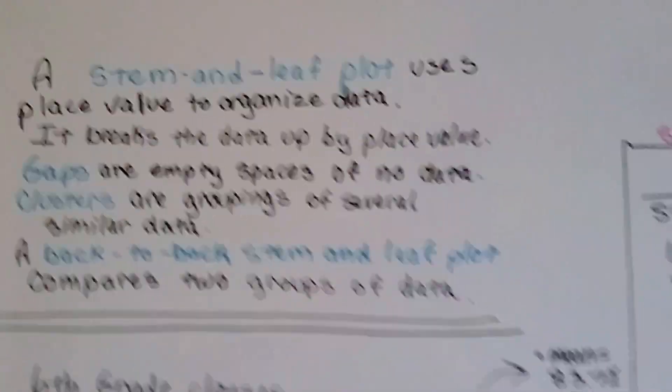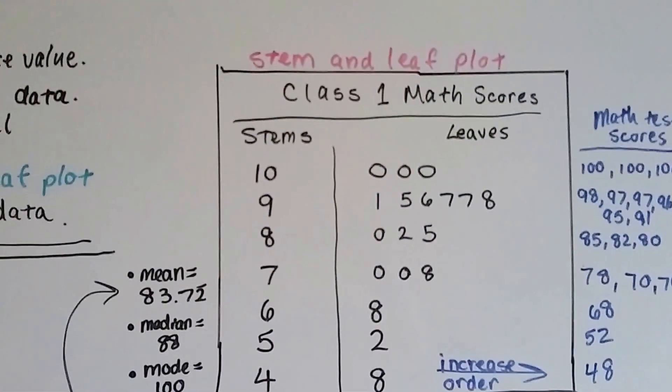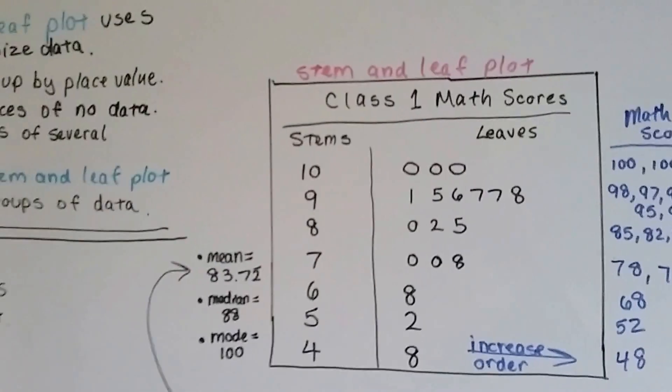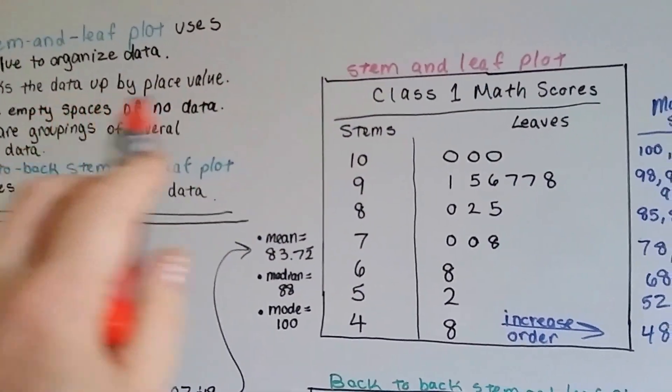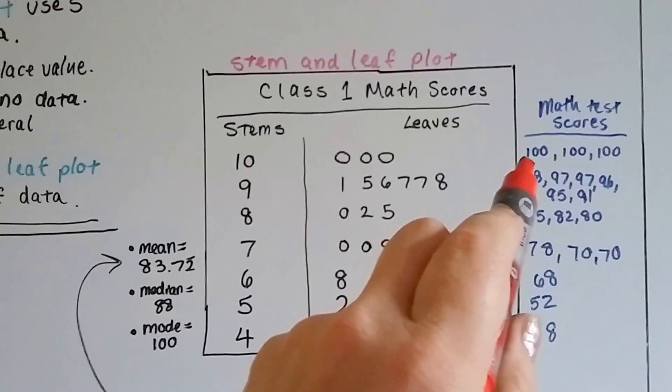I'm going to show you a stem and leaf plot just so that you understand what I'm talking about. It breaks it up by place value. So if a score is 100,